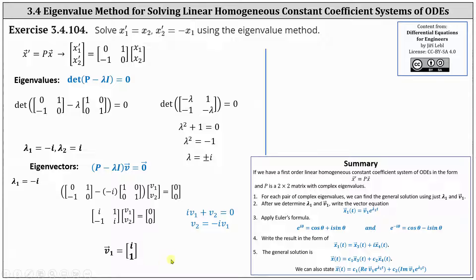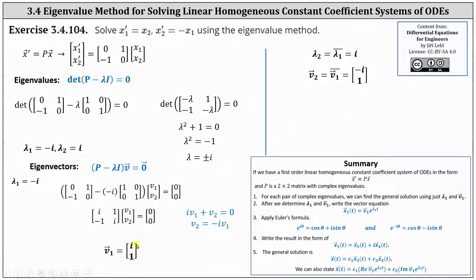Note that lambda sub two equals the complex conjugate of lambda sub one, which we already know from solving. A corresponding eigenvector for lambda sub two, called vector V two, equals the complex conjugate of V one. The complex conjugate of the vector [i, 1] is the vector [negative i, 1], taking the complex conjugate of each entry. However, we don't need this to find the general solution for this problem.